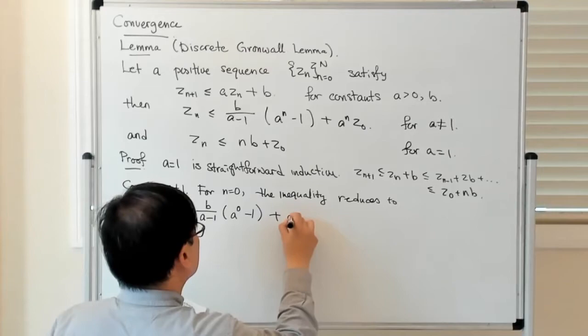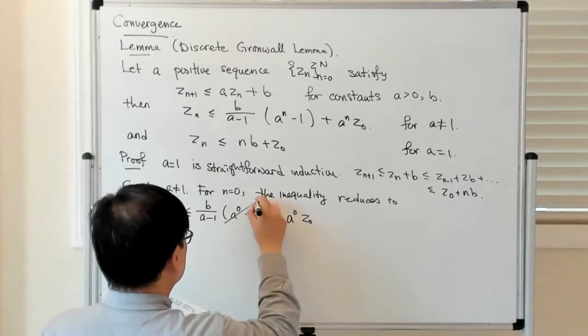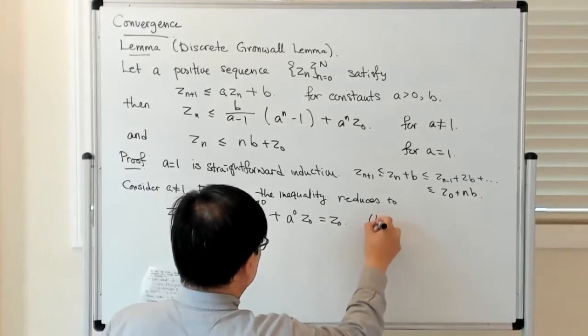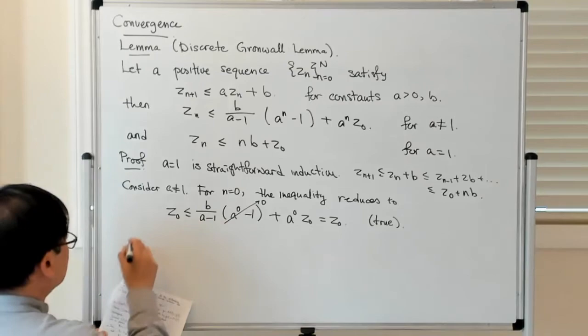Z_0 is less than or equal to B/(A-1) times (A^0 - 1) plus A^0 Z_0. A to the 0 is 1, so this term goes to 0, and A to the 0 again is 1, so this equals Z_0. It's just saying Z_0 is less than or equal to Z_0, which obviously is true. So the induction hypothesis holds.